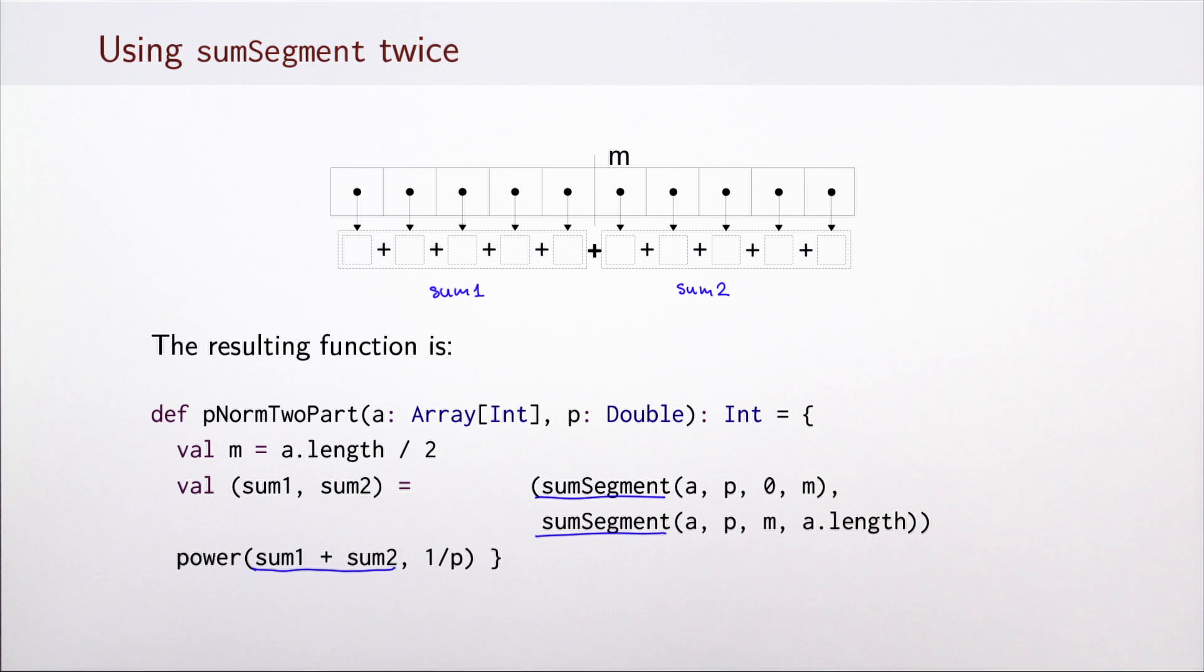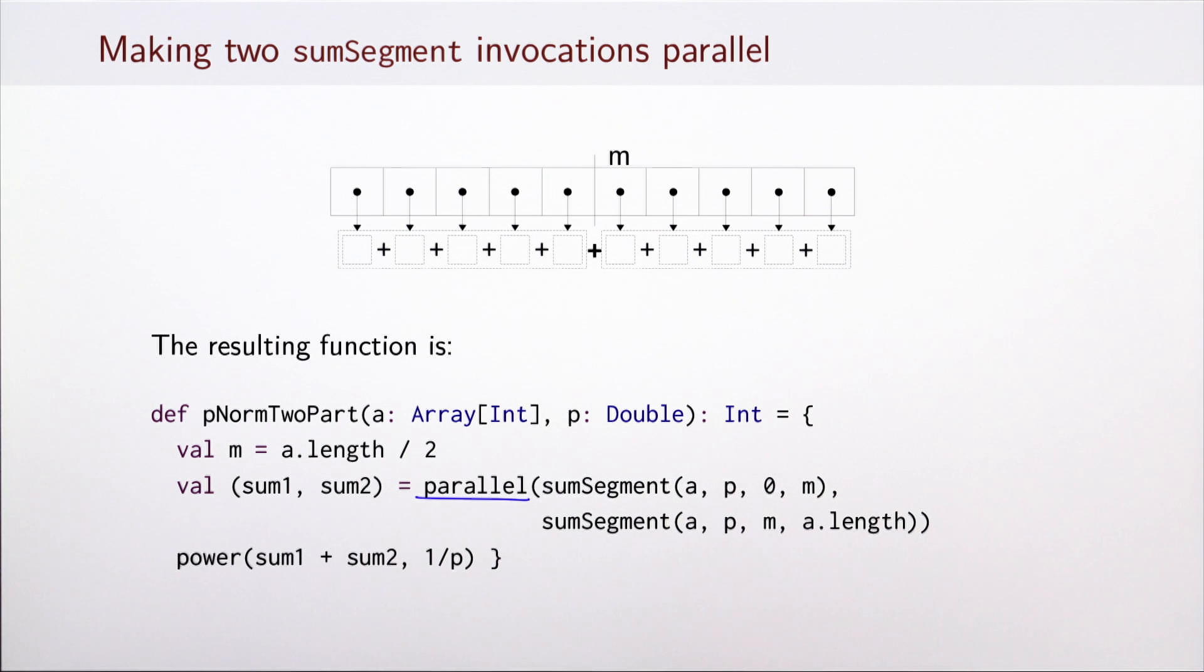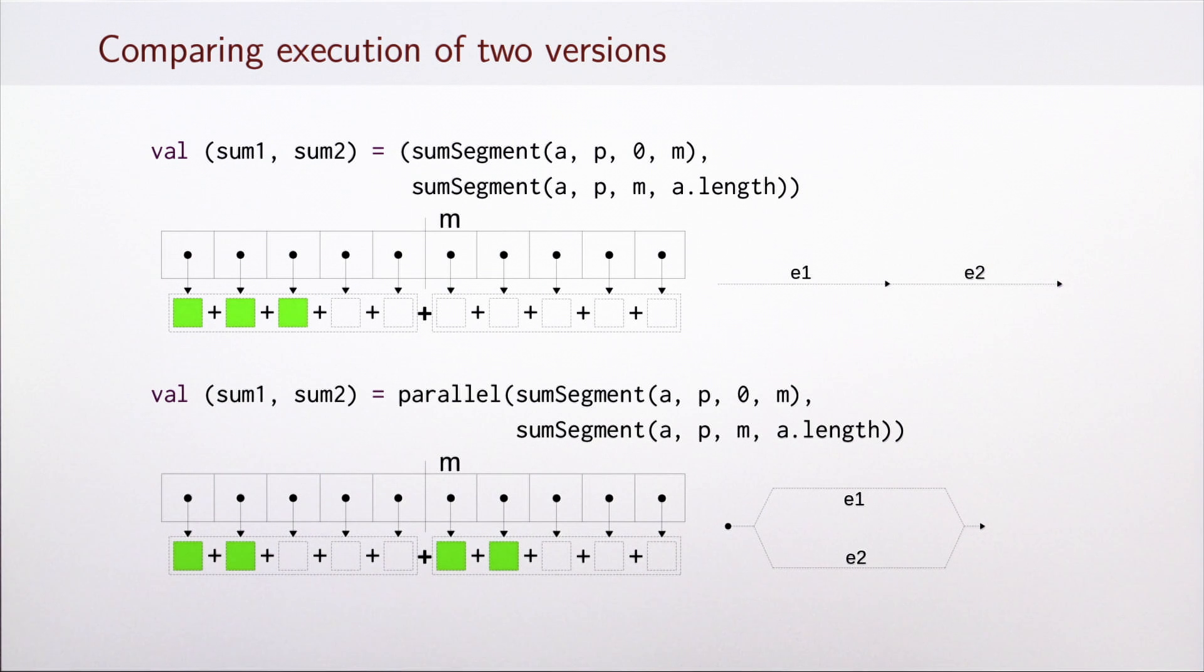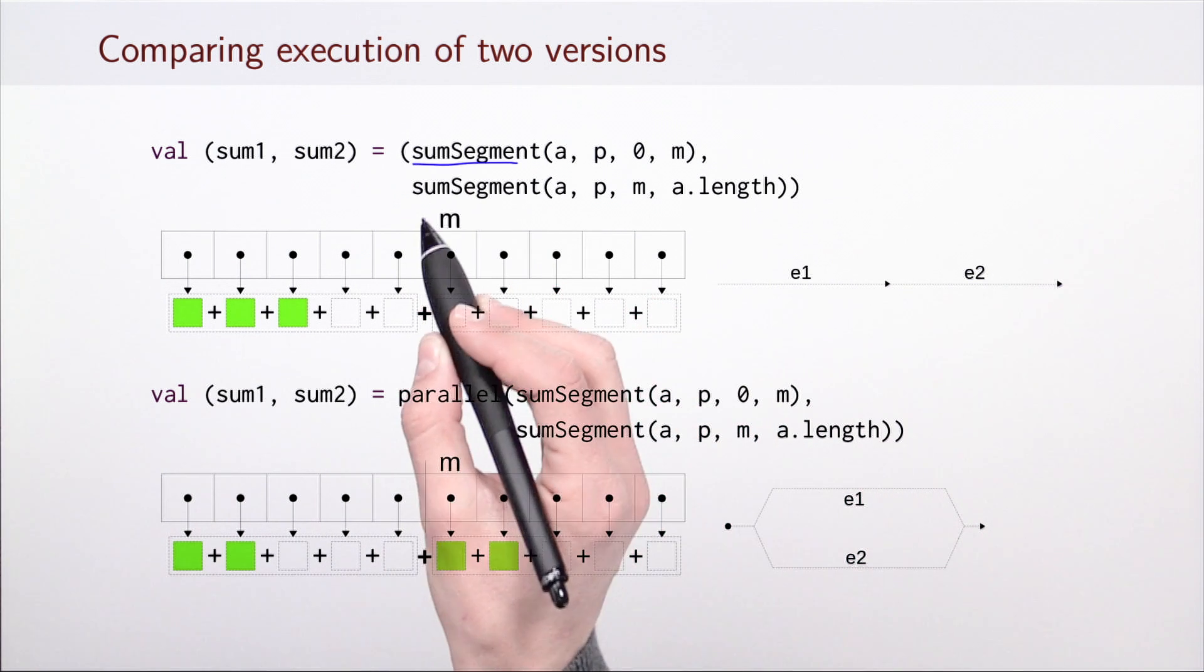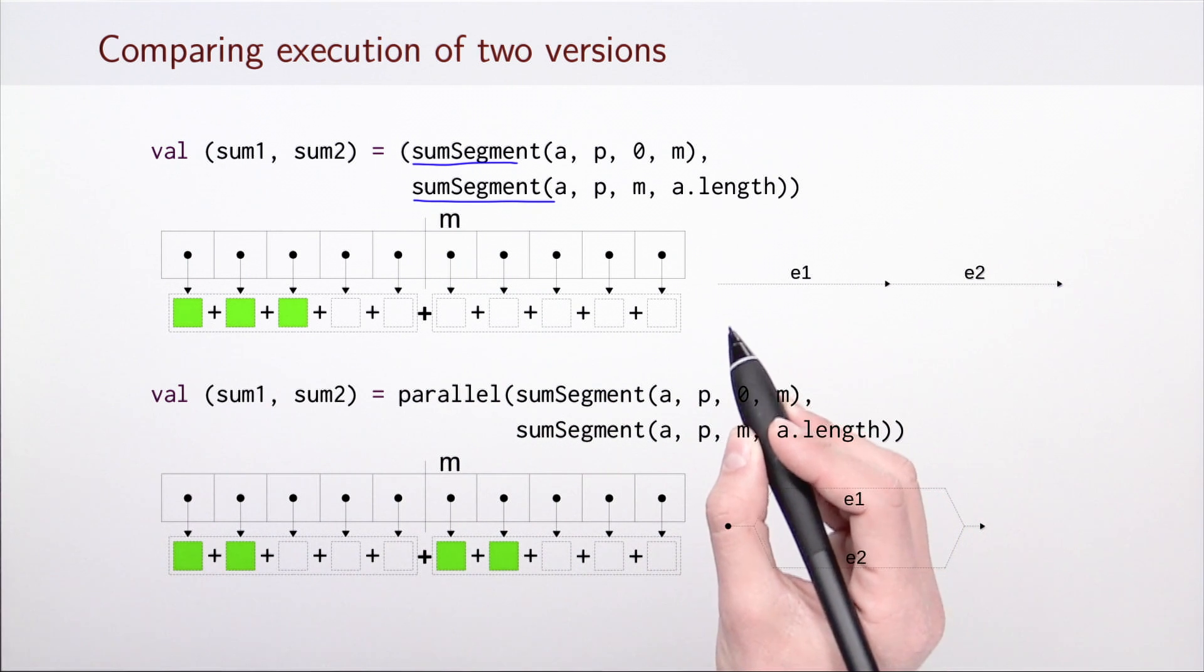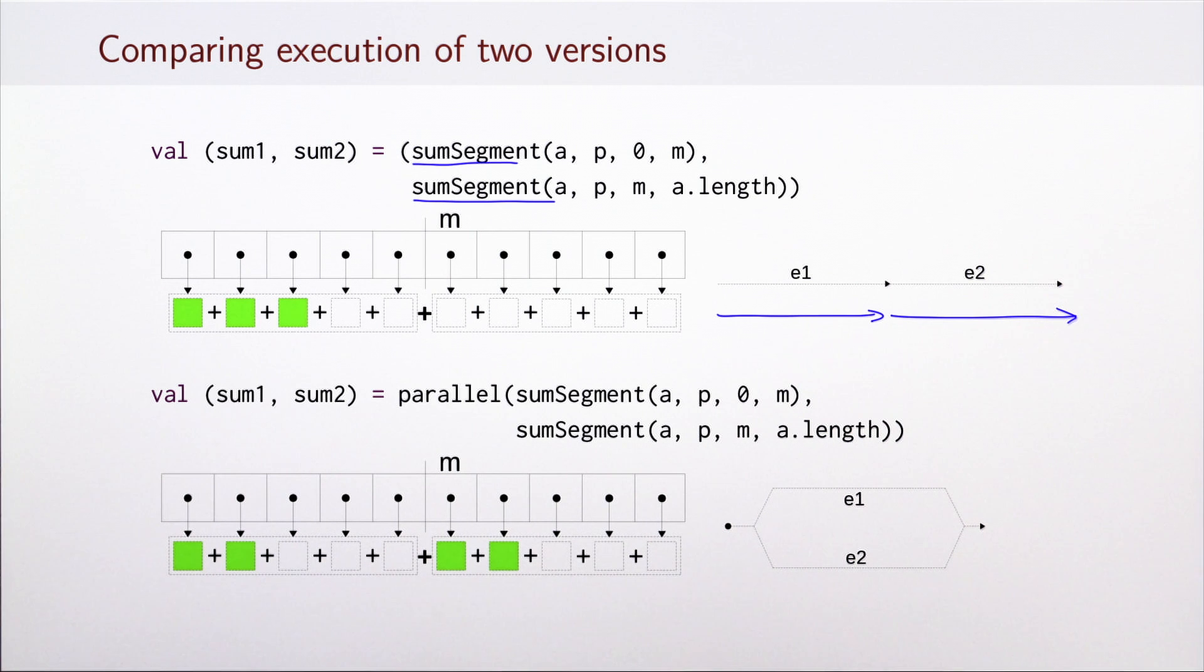How would we obtain a parallel variant of this function? It turns out the only thing that we need to do is insert the parallel combinator in front of this pair. Now let's compare the execution of these two versions. In the first case, we simply compute the first element of the array and then the second element. The computation proceeds sequentially. In the second case, we start by setting up two parallel computations, which may incur some initial overhead. But then we proceed in summing up the elements potentially twice as fast as in the sequential case. As a result, we may finish sooner than in the sequential version.